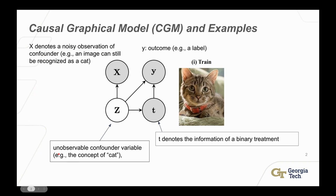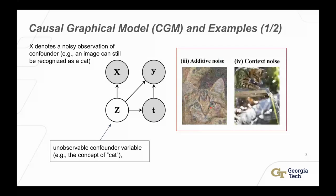For example, an unobservable confounder variable can be the concept of a cat when you want to classify cats, but what we get is usually a photo taken of a cat. There is also an outcome, which is the label. A treatment here means some information perturbs the cat under a noisy condition — for example, additive noise upon the cat, where you can still recognize the image as a cat. There is also contextual noise, such as a cat by the waterside, where there is surrounding information and pattern, but we still recognize the image as a cat.